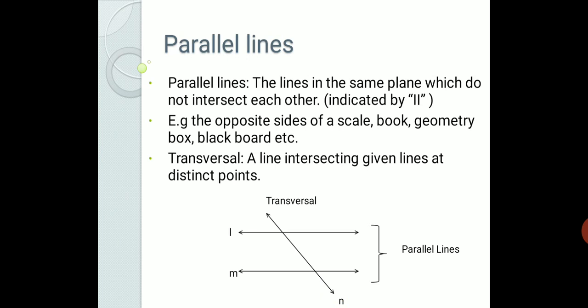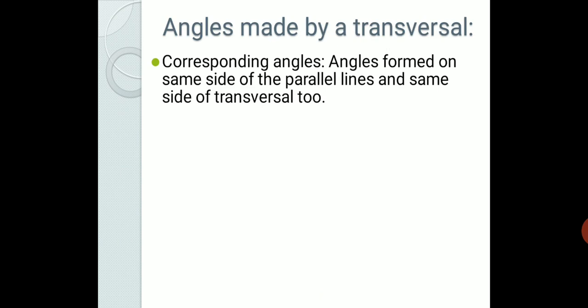Referring to this diagram, let us learn the angles formed by the transversal. The first kind is called corresponding angles — angles formed on the same side of the parallel lines and the same side of the transversal. That means the angles are either above or below the parallel lines and either on the left-hand side or right-hand side of the transversal. Here, angle 1 and angle 5 are both above the parallel lines and on the left-hand side of the transversal, so these two angles are corresponding angles.